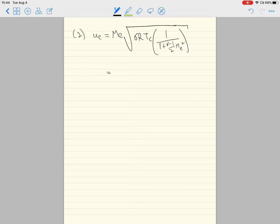2.16 times the square root of 1.3 times 500 times 2000, times 1 divided by (1 + 3/2 times 2.1625²). We get UE is 1,890 meters per second, or a better way of writing it would be 1.89×10³ meters per second.